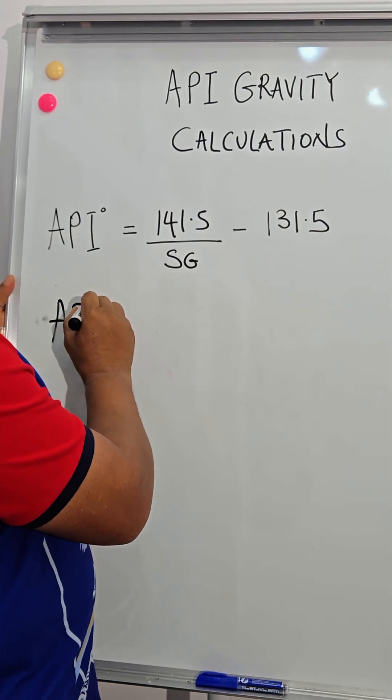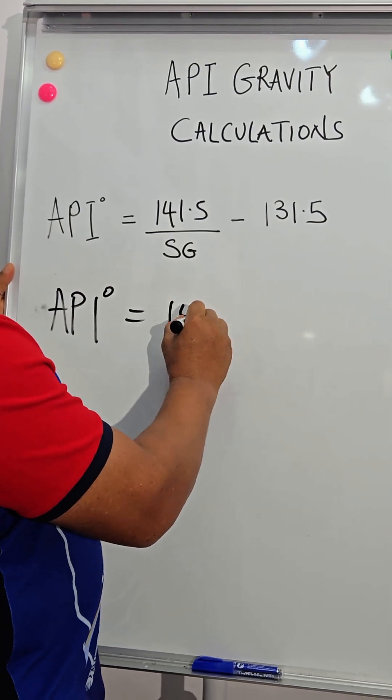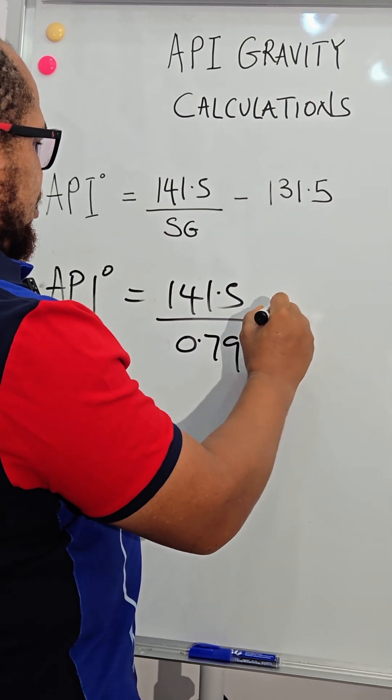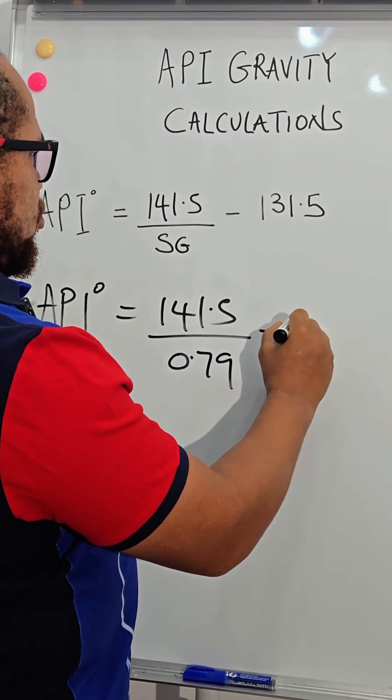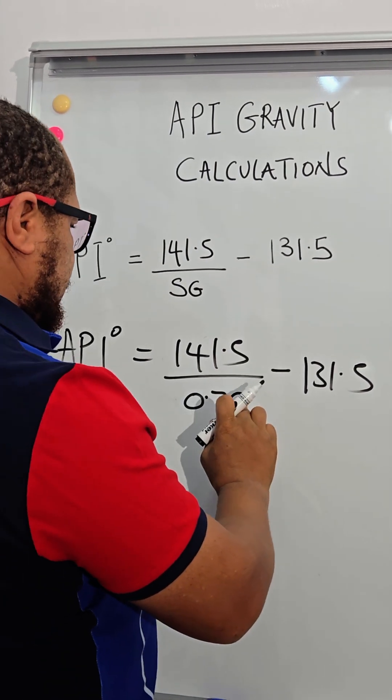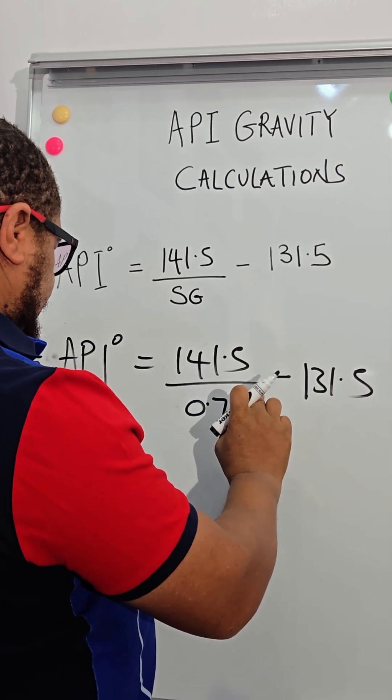So we have API is equal to 141.5 divided by 0.79 minus 131.5.